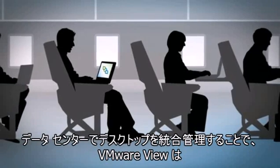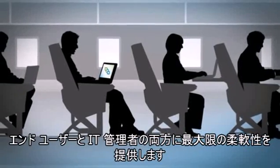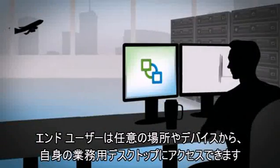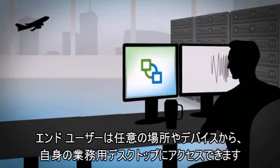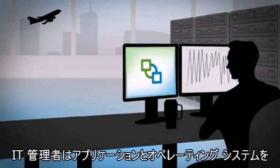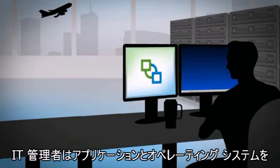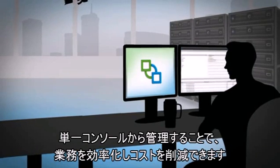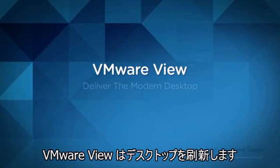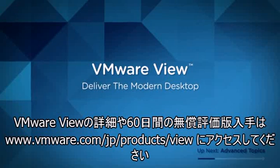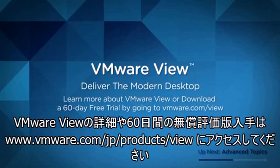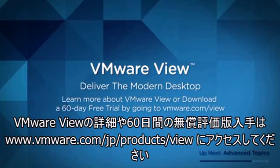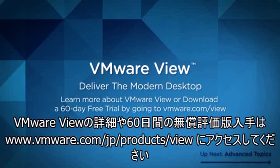With desktops centralized in the data center, VMware View offers maximum flexibility for both end users and IT organizations. End users can access their work desktops from a variety of devices and locations. IT admins can manage the applications and operating systems from a single console, making their job easier and reducing costs. VMware View — deliver the modern desktop. Learn more or download a 60-day free trial at VMware.com/View.